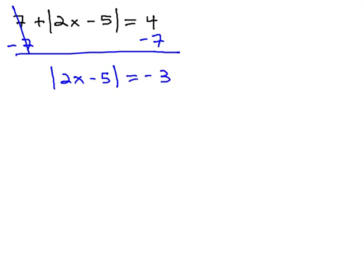It's very easy at this point to run into the error of saying, take the 2x minus 5 and make it equal to positive 3 and negative 3. However, there is an error in doing this.